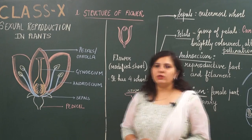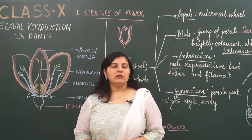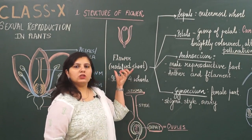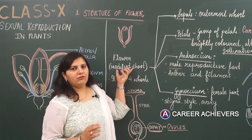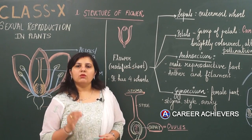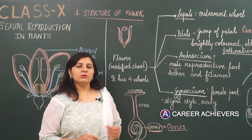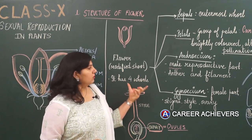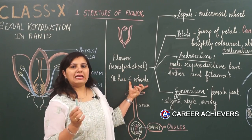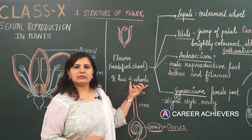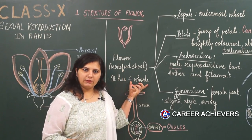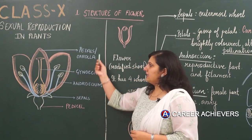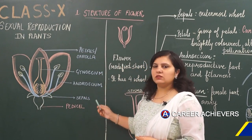First, let us learn about what a flower is. A flower is a modified shoot. Modified shoot because it comprises four whorls — the layers that are present in a flower. Looking at a flower, we can see four major whorls.